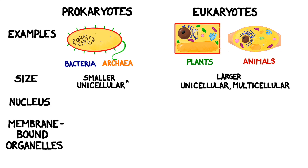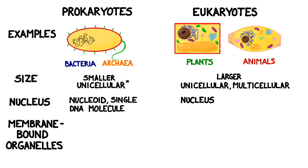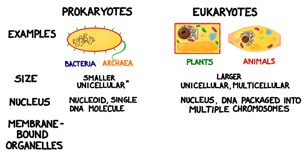Prokaryotes do not have a membrane-bound nucleus. Instead they have something called a nucleoid, which is basically an area where a single DNA molecule is kept. Eukaryotes not only have a membrane-bound nucleus, but also organize their DNA into multiple packages known as chromosomes.